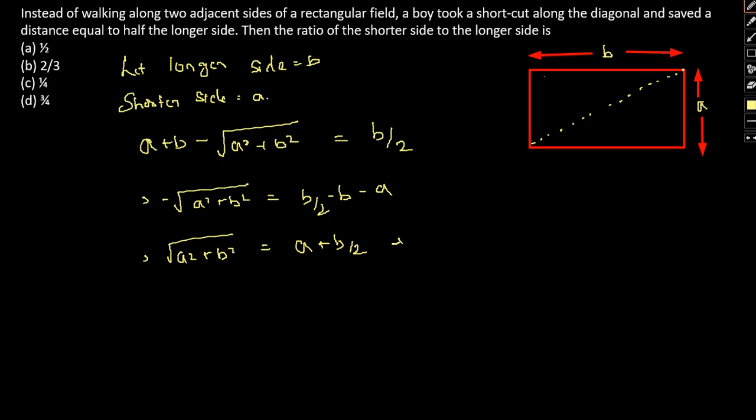If we square both sides, we have A square plus B square equal to A square plus B square by 4 plus AB.